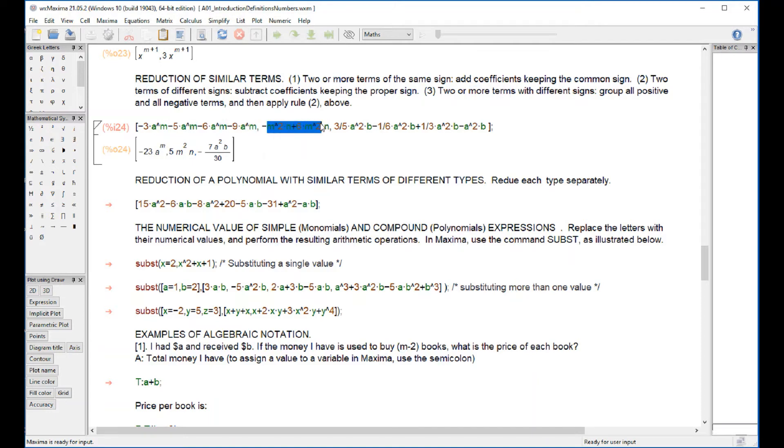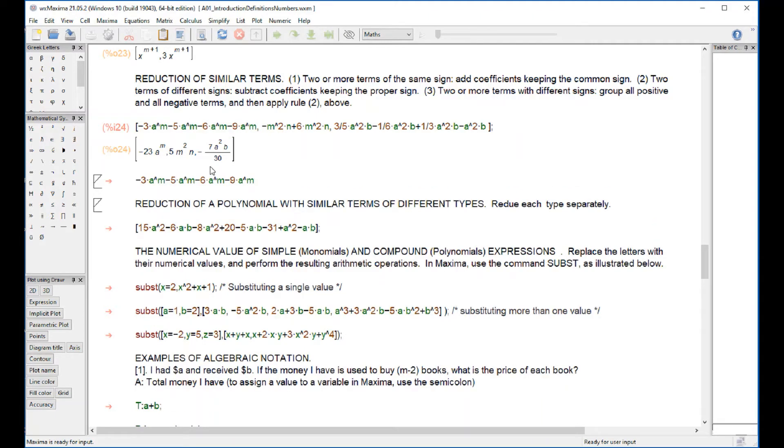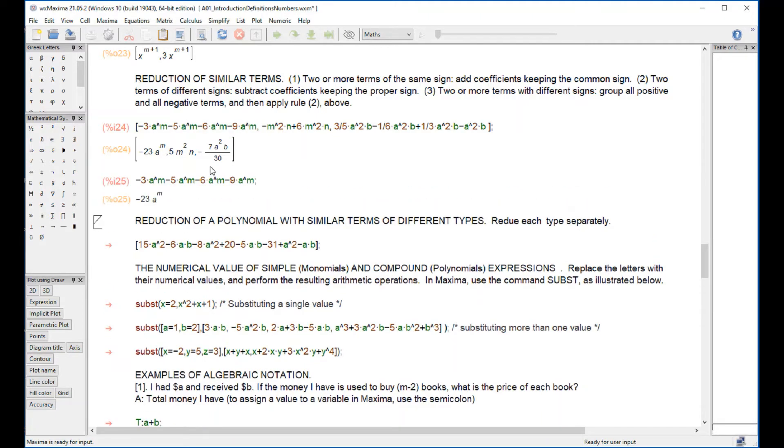These m²n terms get reduced to 5m²n. Then you have these terms right here. If you want to see these terms in detail, you could go ahead and copy here, select, do control-C, click below, control-V, and do shift-enter. And that's how this first term right here gets reduced to this term.